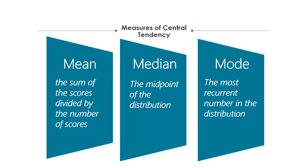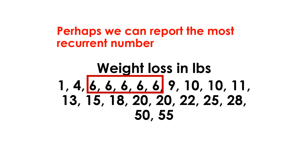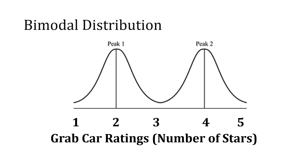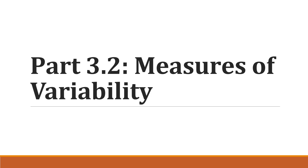The last measure of central tendency is the mode — the most recurrent number in the distribution. It's the quickest way to report central tendency. The advantage of the mode is that when you say the mode is 6, it truly means many people scored 6. The mean can give you a value that nobody actually has (like 16 when no sibling is 16), but the mode represents a real, observed value. A distribution can also be bimodal, meaning it peaks twice — for example, if Grab car ratings peak at both 4 and 5 stars.